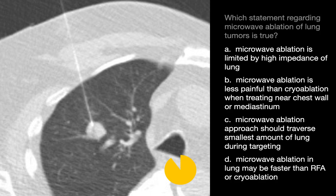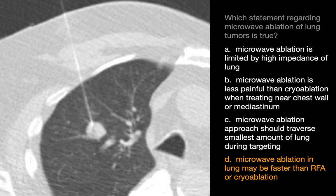Which of the following statements regarding microwave ablation of lung tumors is true? The true statement is D: microwave ablation in the lung may be faster than RFA or cryoablation. Microwave ablation can generally provide predictable and large ablation zones, even in arid lung. Treatment times are typically two to five minutes on average, compared to 12 to 15 minutes for a similar-sized treatment area with other modalities. Energy propagates directly through air and tissue, so the high intrinsic impedance of lung tissue is not a barrier to effective treatment.